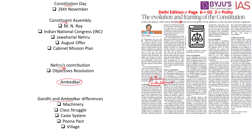Constitution Day, also known as Samvidhan Divas, is celebrated every year on 26th November. This is because on 26th November 1949 the Constituent Assembly adopted the constitution of India, which then came into effect on 26th January 1950. So the adoption happened on 26th November and the implementation happened on 26th January 1950.